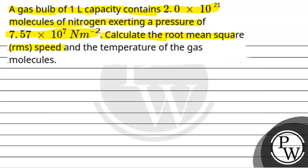Calculate the root mean square RMS speed and the temperature of the gas molecules. So the key concept is ideal gas equation. The ideal gas equation states that PV = nRT, where P is pressure, V is volume, n is number of moles, R is the universal gas constant, and T is temperature. From this, T will be equal to PV upon nR.